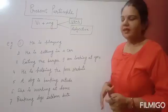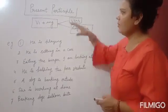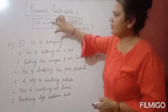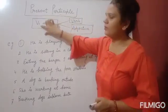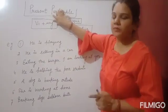Good morning, dear students. Today we are going to discuss present participle and past participle. First of all, we shall discuss present participle. When we add -ing to the base form of the verb, we always get present participle.